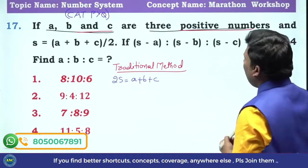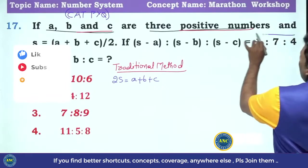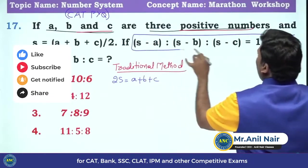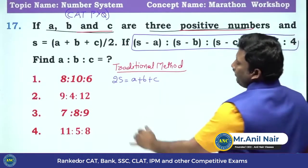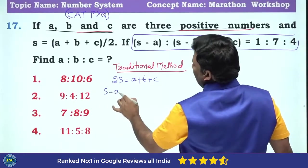S minus A, S minus B, S minus C, ratio is given as 1 is to 7 is to 4.